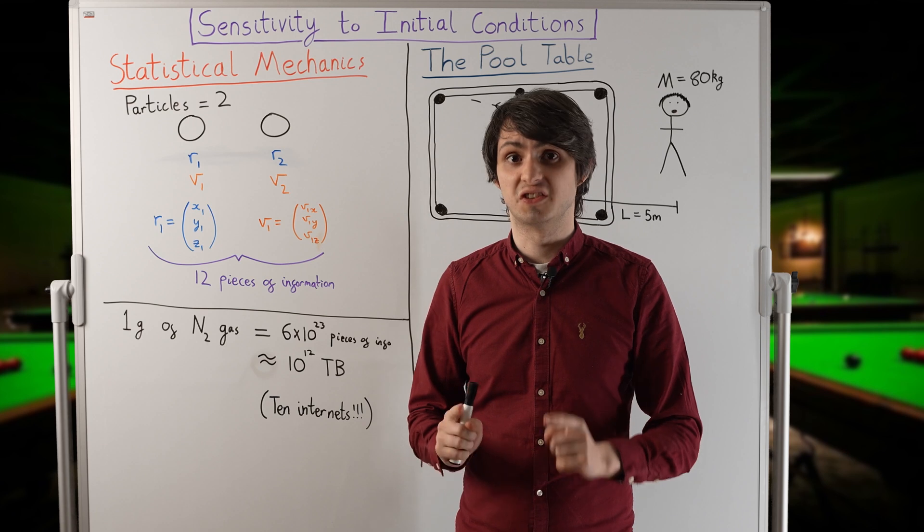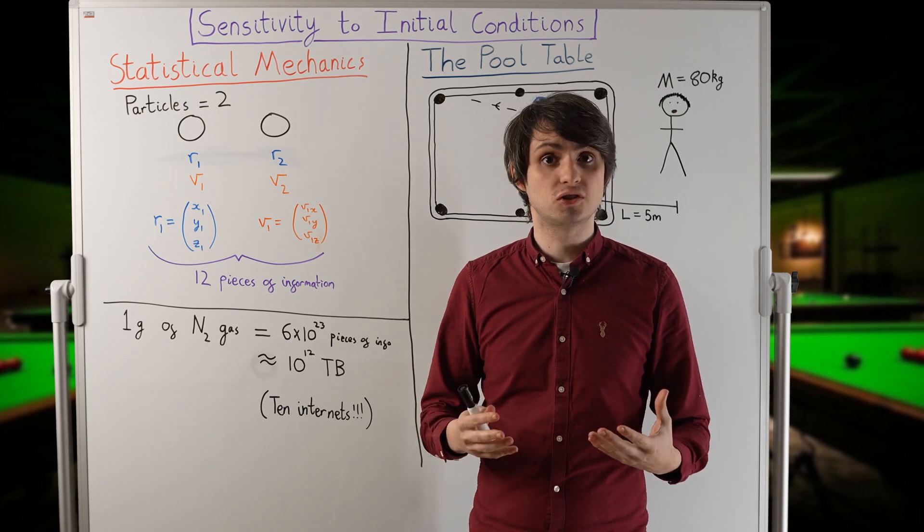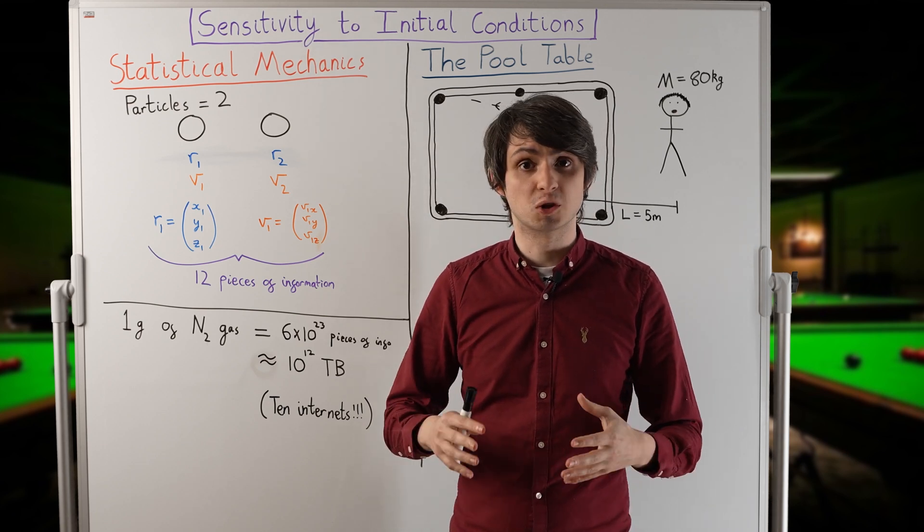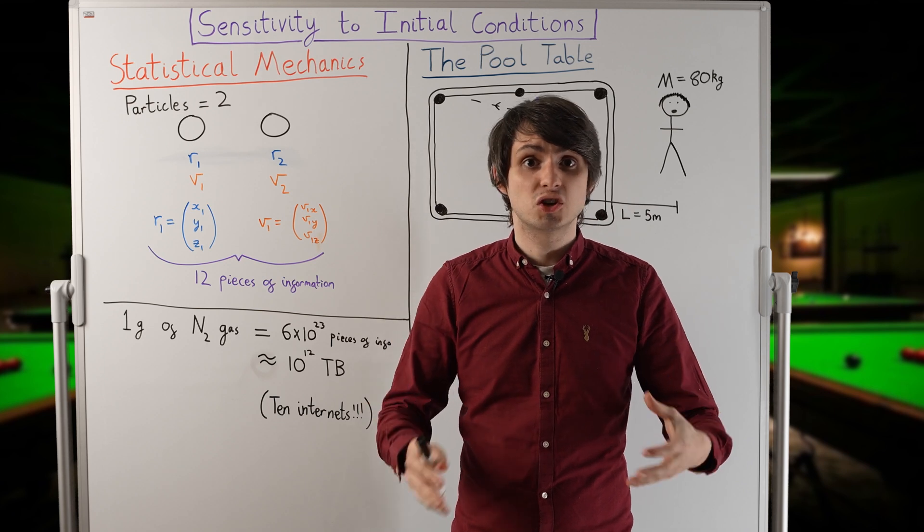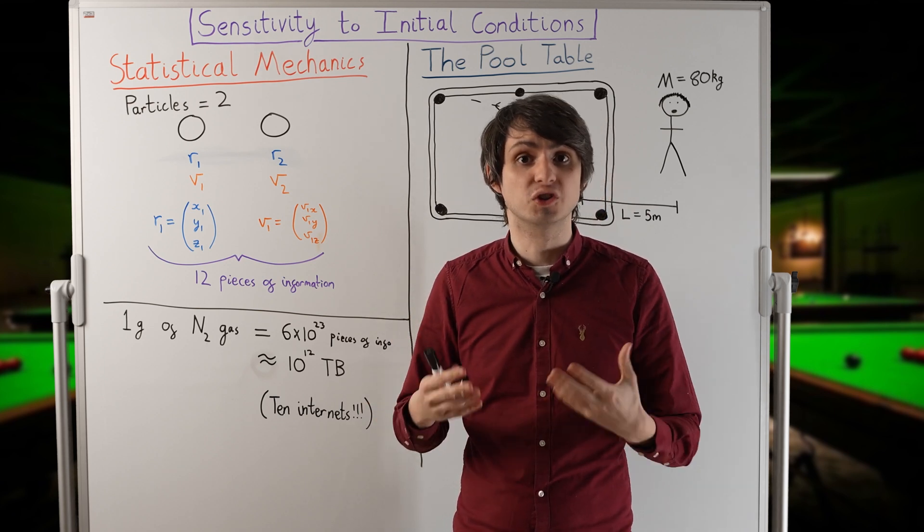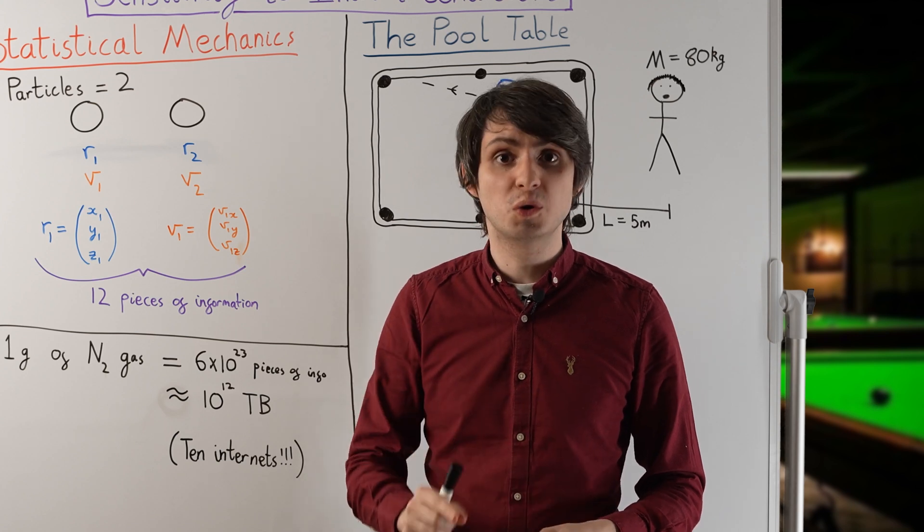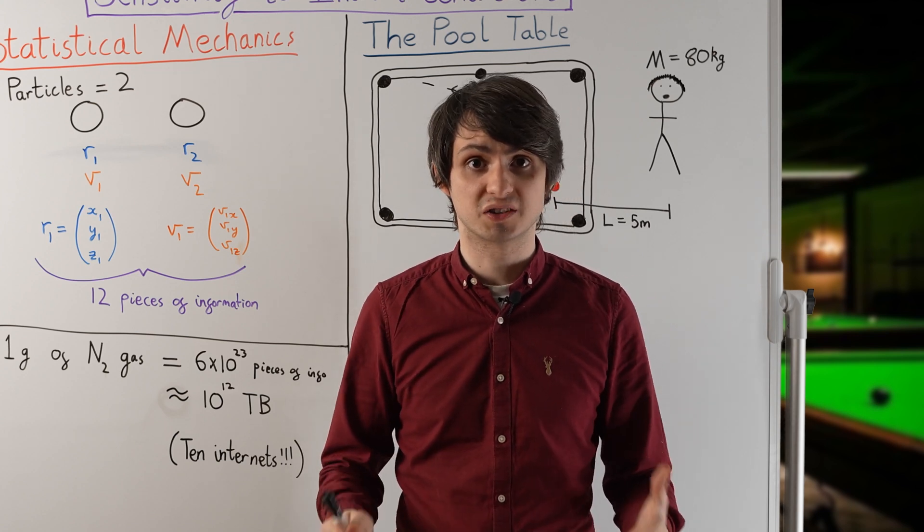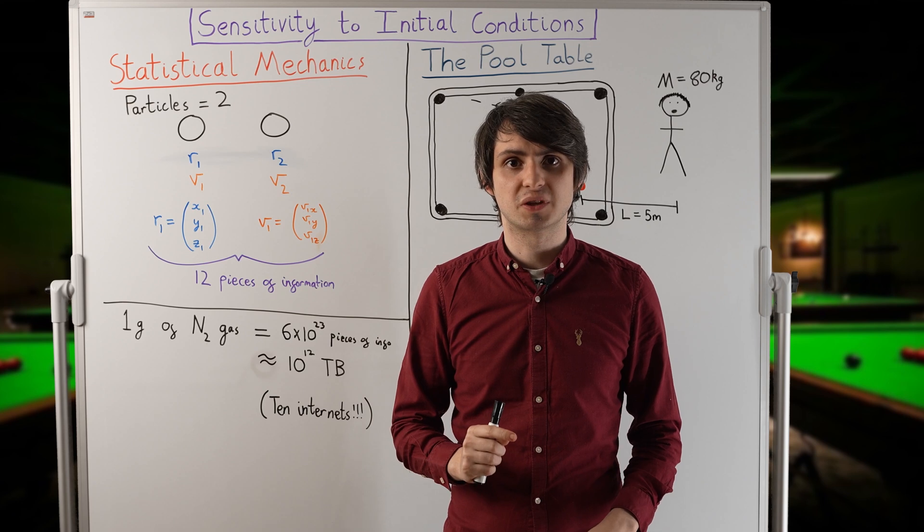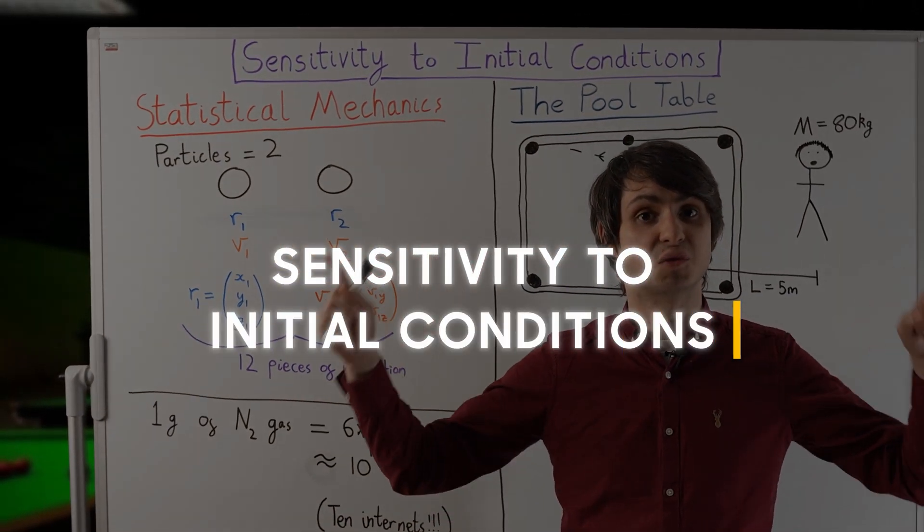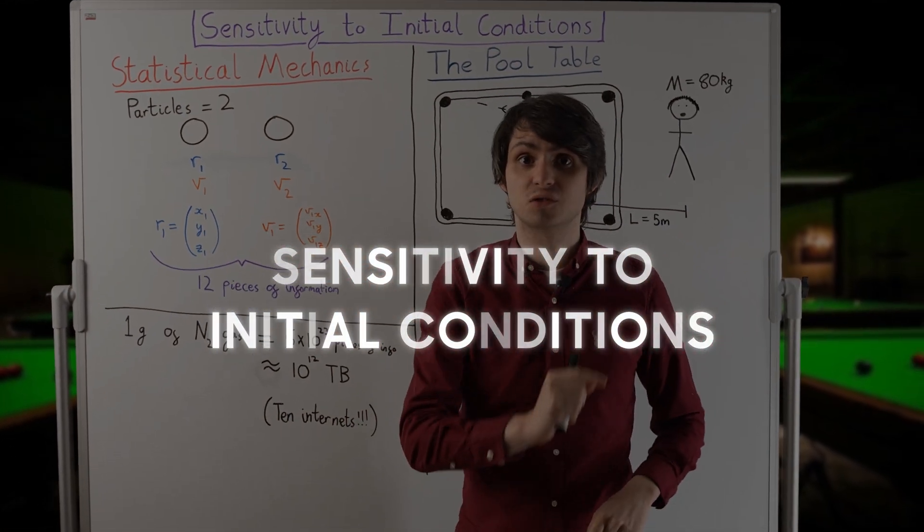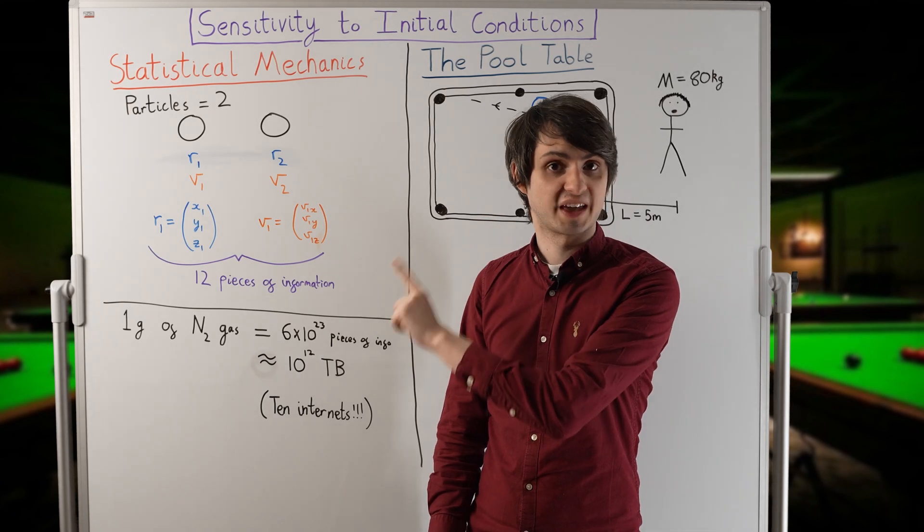It gets worse than this, though. Suppose that data storage was no obstacle, and we could build a ginormous computer that could store and handle all the data we needed. Even if we did this, we still wouldn't be able to keep track of all those particles. This is because of something called the sensitivity to initial conditions, and is the second reason we need statistical mechanics.